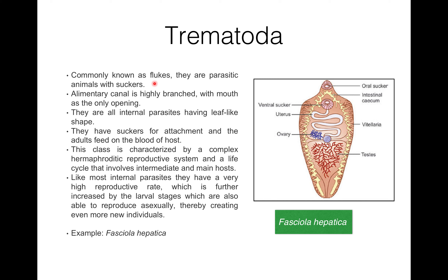Examples of Trematoda include Fasciola hepatica, Opisthorchis, Diplozoon, Polystoma, and Cotylaspis. Fasciola hepatica has two suckers — oral and acetabulum — both devoid of hooks. The life cycle of Fasciola hepatica is complex, with numerous larval stages in two or three intermediate hosts, and larval forms reproduce asexually before metamorphosis.